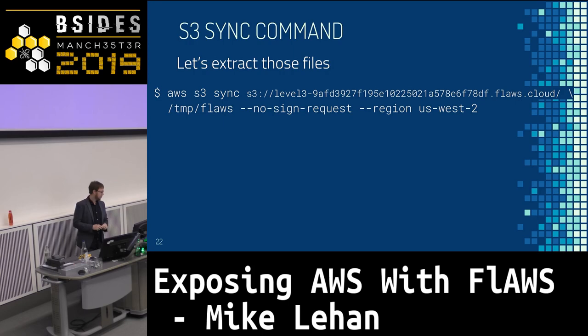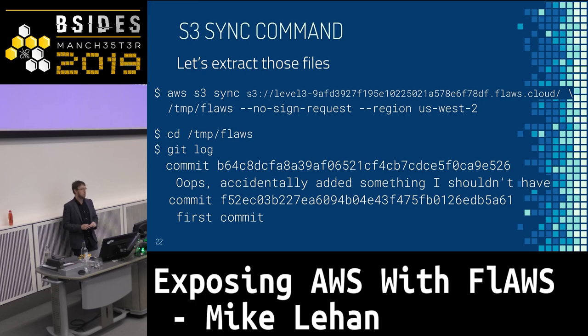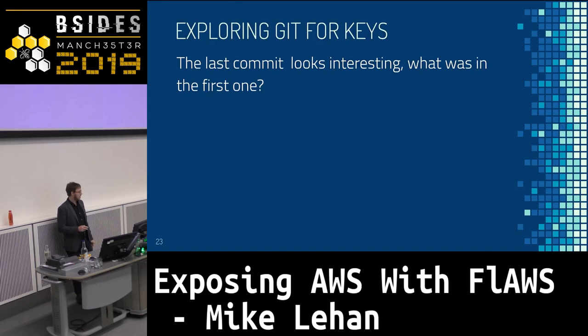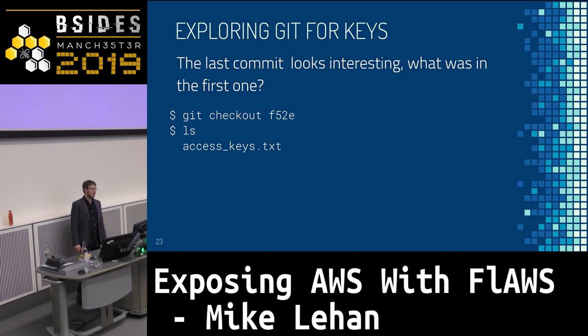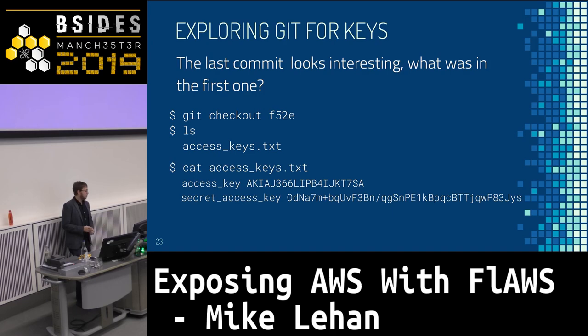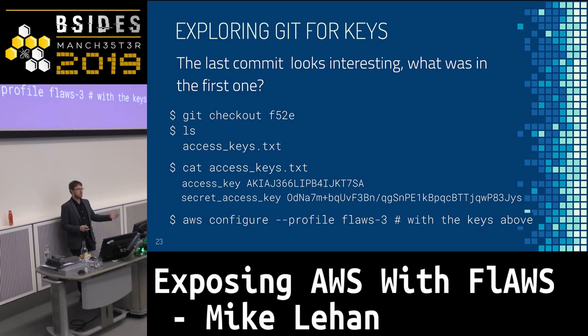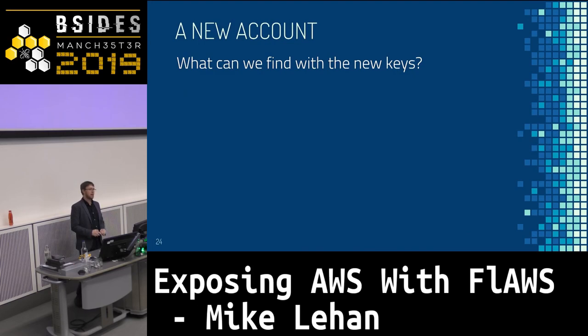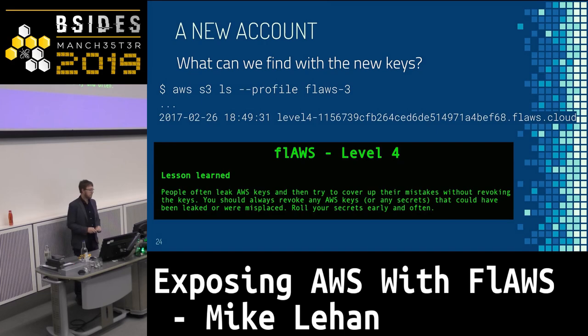Some poor soul has uploaded their .git directory. We pull it down using 'aws s3 sync'. Now we're in a regular Git repository and can run 'git log'. We see some commits — the first commit and then another: 'I've added something I shouldn't have done.' Using Git, we check out what's in that first commit that the second one undid. We run ls — and there's accesskeys.txt. Now we have an AWS access key and secret key. We run 'aws configure' with a new profile name, then list all the buckets on the account and see a bucket called level four.